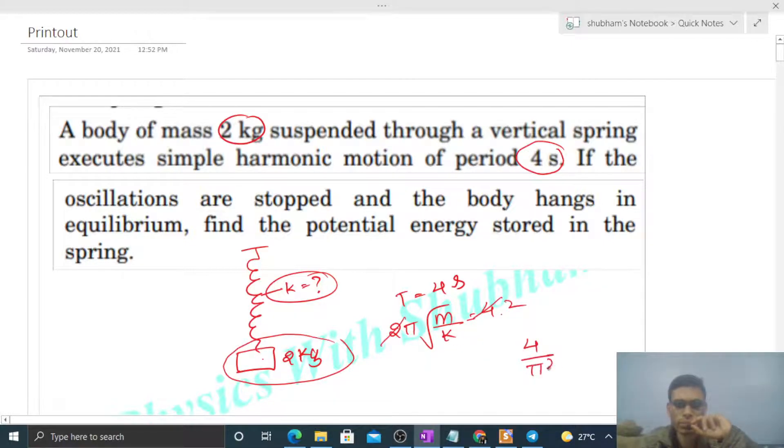That will be 4 divided by π² equals m by k. So k will be m by 4 into π². Mass is given as 2, so we'll put 2 here. So this will give k equals π² by 2.